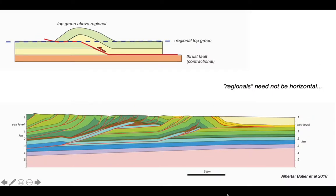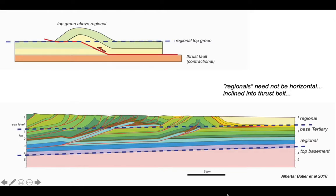Regionals need not be horizontal. We can explore this by looking at this cross-section through the Alberta foothills of the Canadian Cordillera and draw the regional on for the top basement and also for the base of the tertiary here. And in both situations, these regionals are inclined gently down to the left. We can see where preserved that when we take the base of the tertiary strata in towards the thrust belt, it's been uplifted above regional so much so that it's been eroded away. So we're dealing with thrusts.